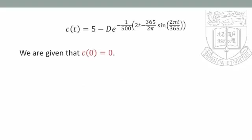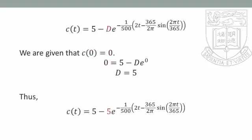We are given that the lake is initially clean: when t = 0, C = 0. Substituting these values, we get 0 = 5 - d·e^0, which gives d = 5. Therefore, the concentration of the toxic chemical t days after it started entering the lake is C(t) = 5 - 5·e^[-(1/500)(2t - (365/2π)sin(2πt/365))].